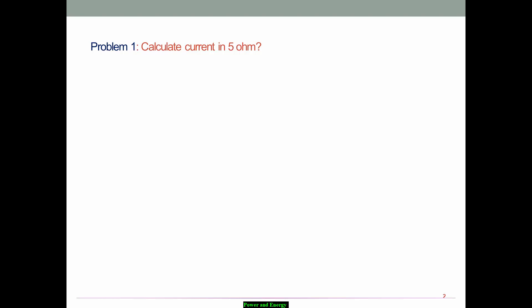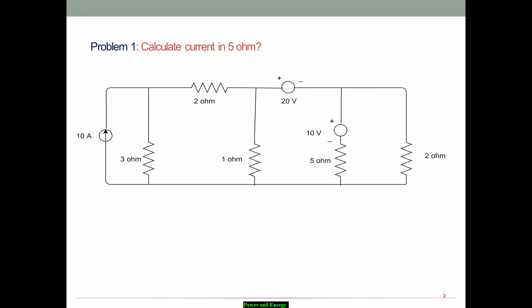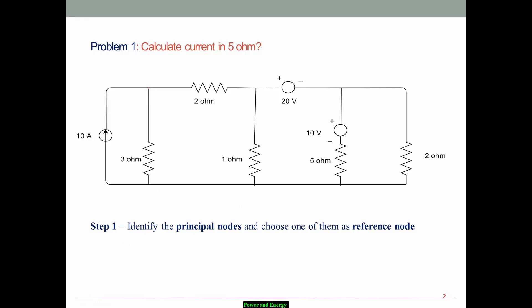Let's go for a sample problem and find the solution. Calculate the current in the 5 ohm resistor of the following circuit — I am taking the same circuit as in the previous slide. Step number one is to identify the principal nodes and choose one of them as a reference node. A principal node is a point where three or more branches connect at a common point.